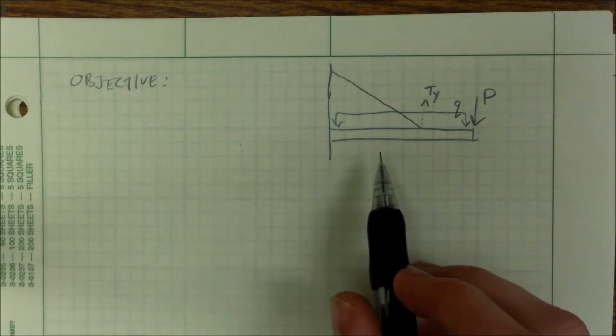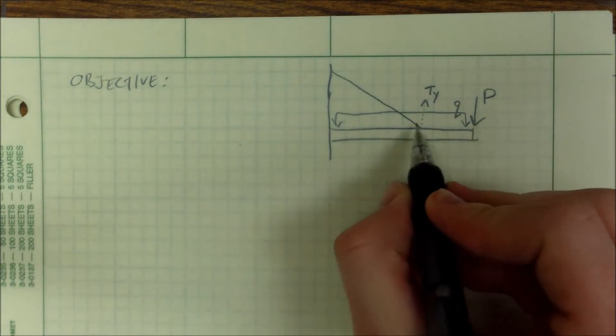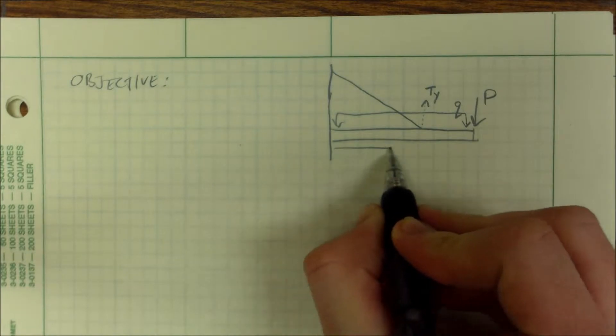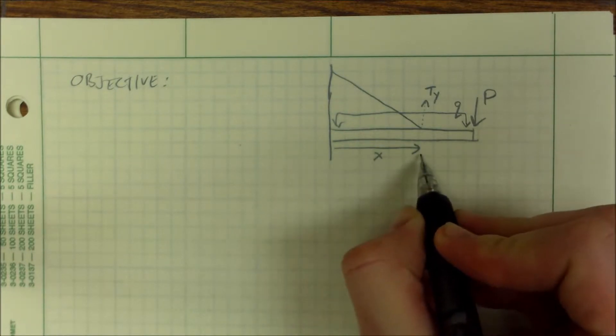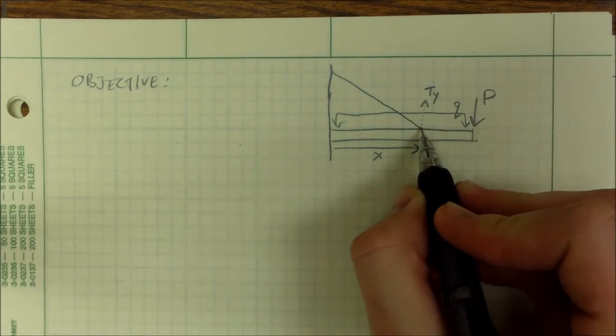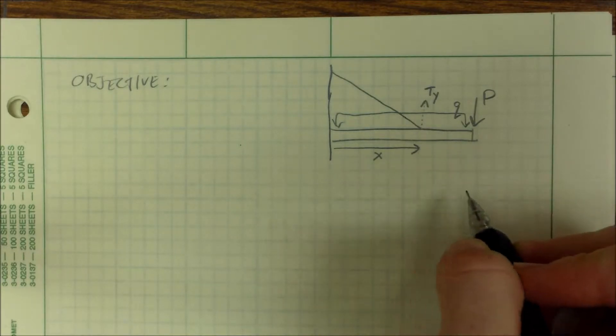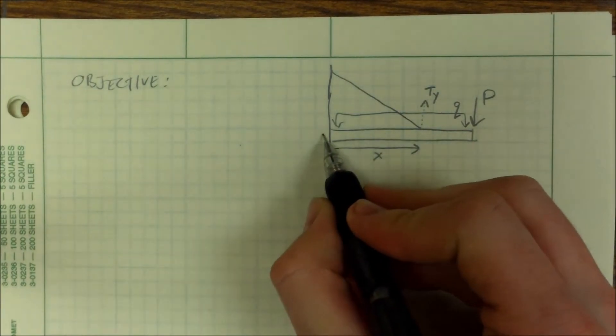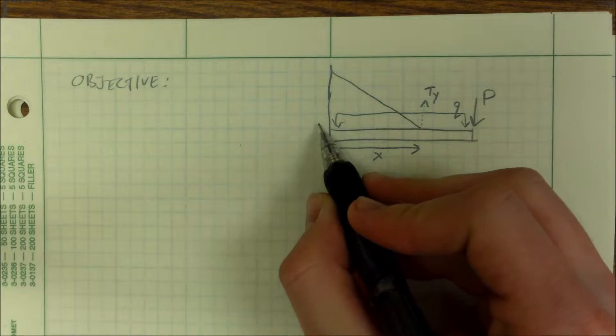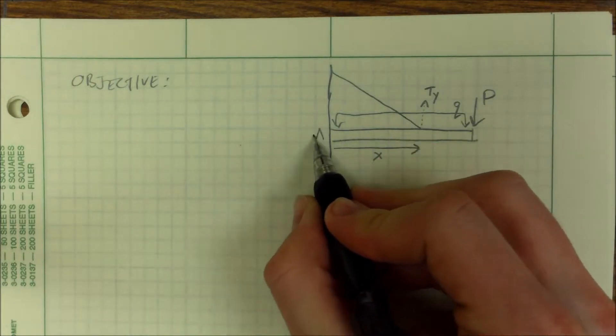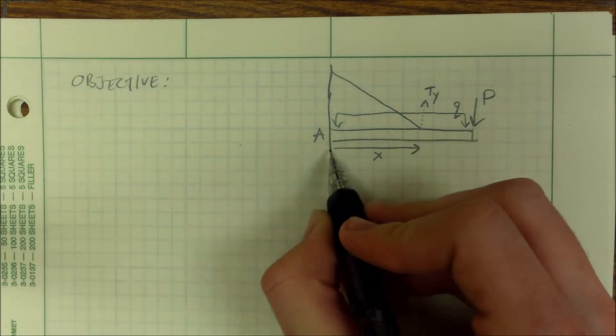What we're trying to do is find out where this tension needs to be in terms of X, and what the magnitude of that tension needs to be, such that our moment at A and shear at A equals zero.